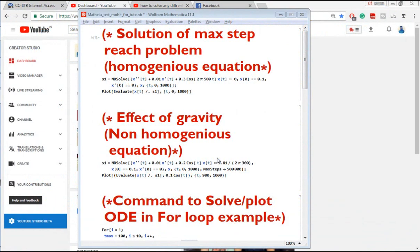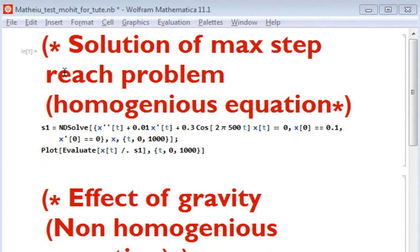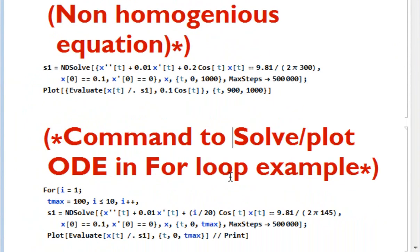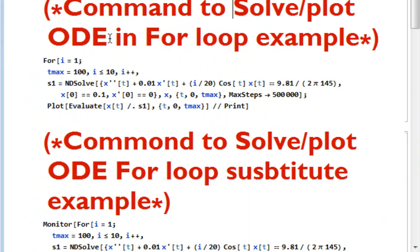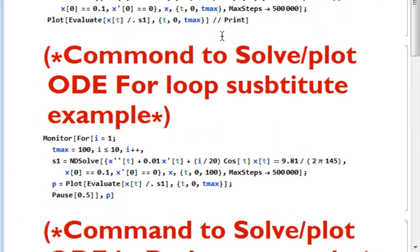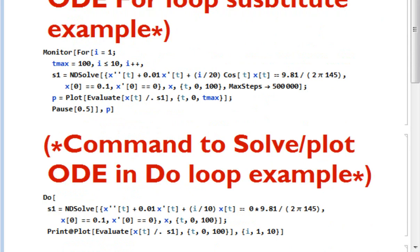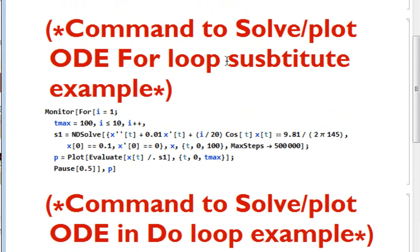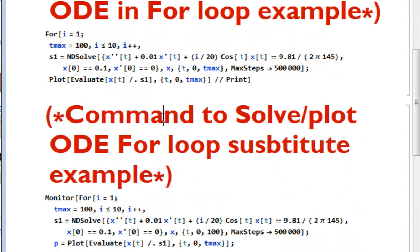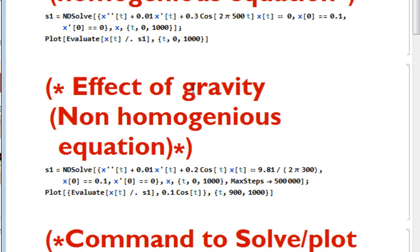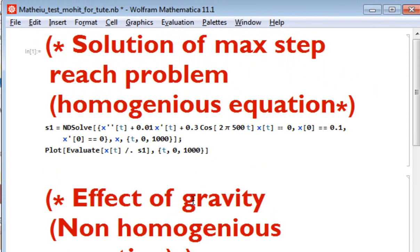I have divided the content into six parts. The first part covers the max step reach problem using a homogeneous equation example. The second part covers the effect of gravity, which is a non-homogeneous equation example. Then I will cover the command to solve or plot an ODE in a for loop, the substitute method, and similar approaches using a do loop.